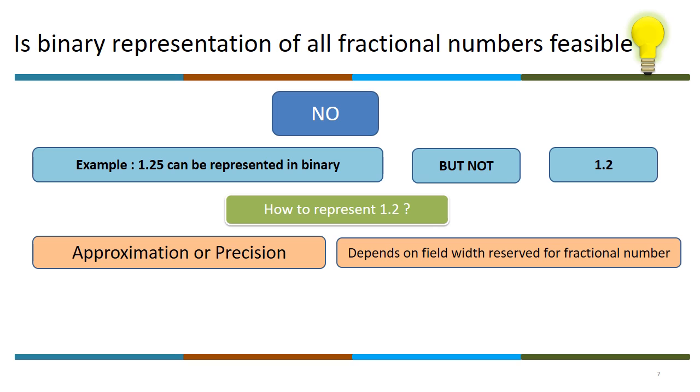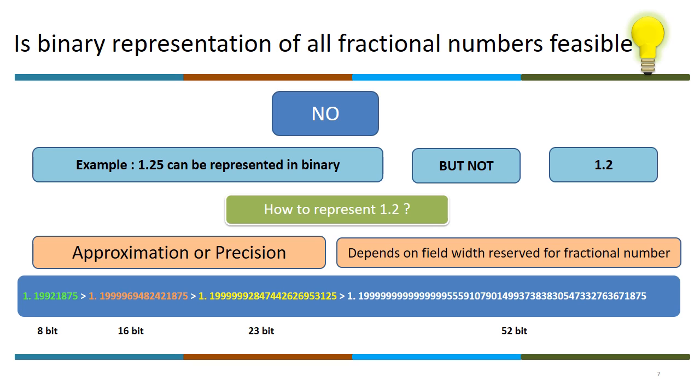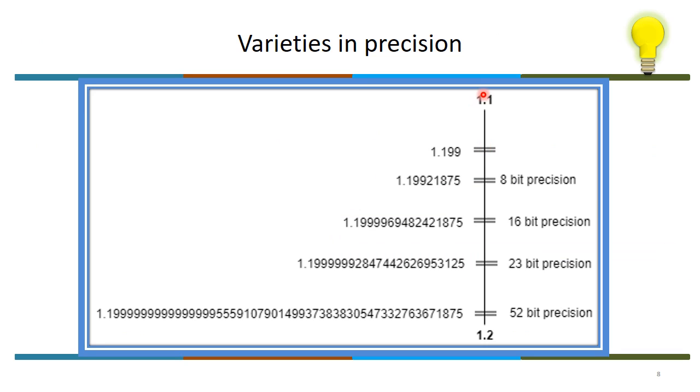Here are a few approximations depicted. If I reserve 8-bit field width for a fraction number, I get this approximation. For 16-bit, nearer to 1.2. Again 23-bit, still more nearer. And 52-bit, almost close to 1.2 but still not 1.2. To get a better feel of these numbers, we have this plot between 1.1 to 1.2. We started at 1.199, which we take as an approximation. All can be treated as 1.2 depending on the application.